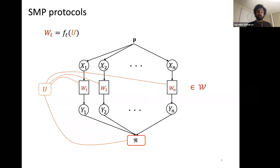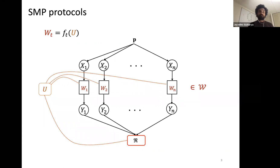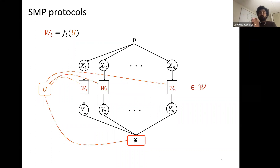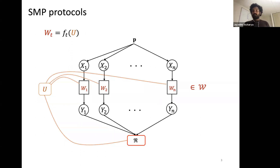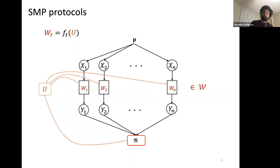In the first part we looked at various kinds of protocols. The first was a simultaneous message passing protocol where the different channels at the different users are all chosen as a function of one public randomness u. This u is independent of all the inputs and is available at all the users, and user t chooses its channel w_t according to some function f_t of u. Conditioned on u, since x_1 through x_n are i.i.d. drawn from p, y_1 through y_n are independent.